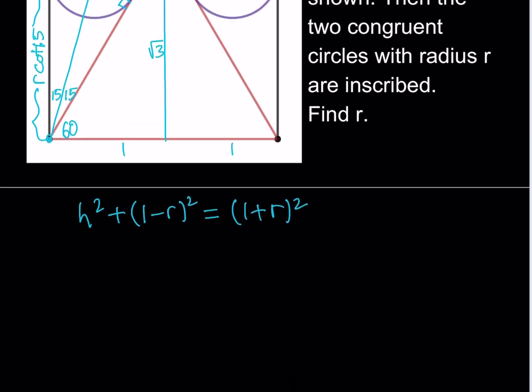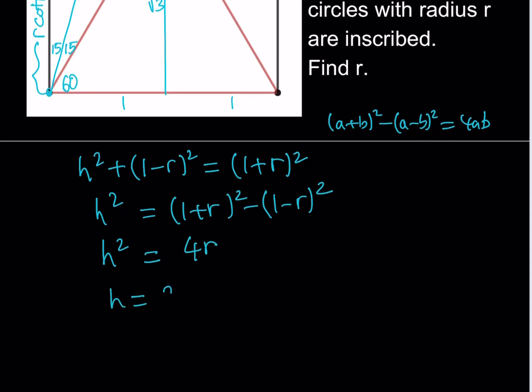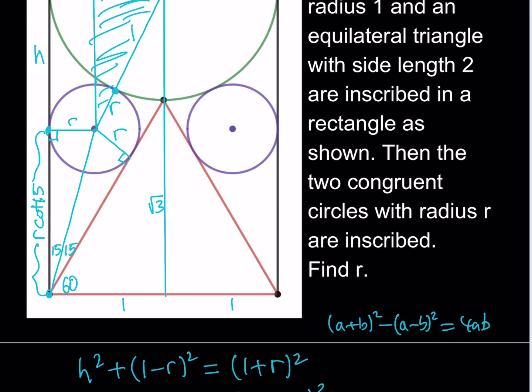So from here, what I can do is I can find H in terms of R. And as you know, we do have a nice identity that we can use here. Let's go ahead and subtract them. If you subtract these two quantities, you always get 4AB, which is kind of nice. This is very helpful in algebra. So I should be getting from here 4R, which means that H is equal to 2 root R. Beautiful. Now, I was able to find H in terms of R, which is right here.